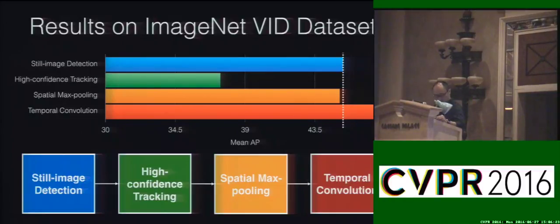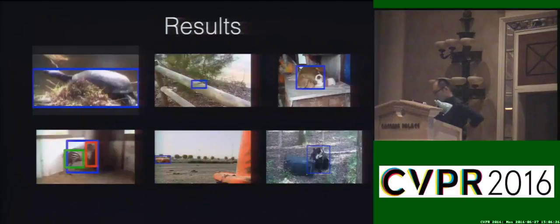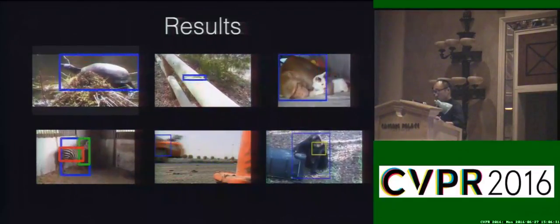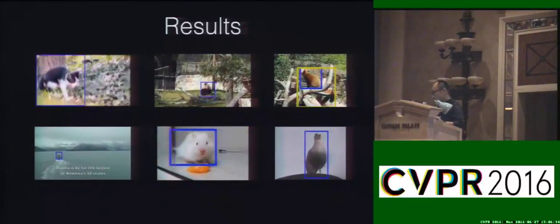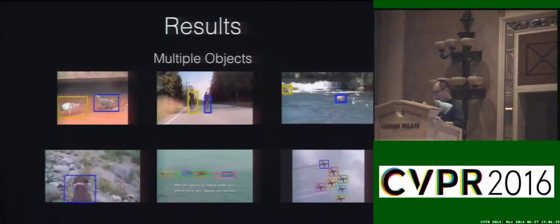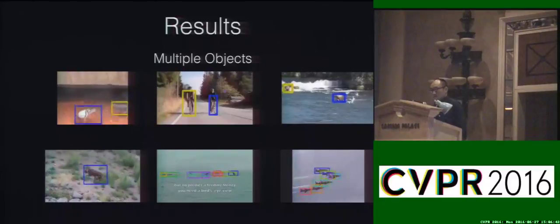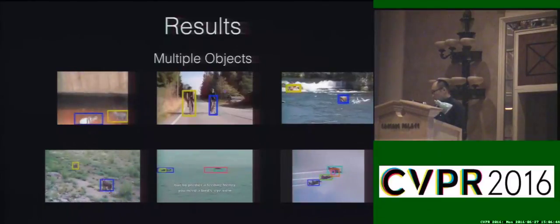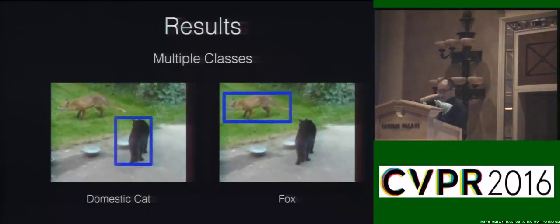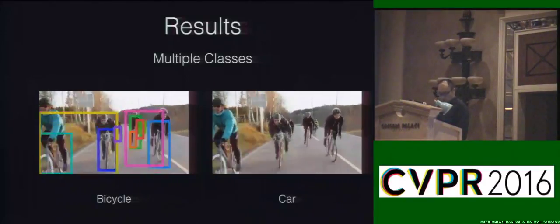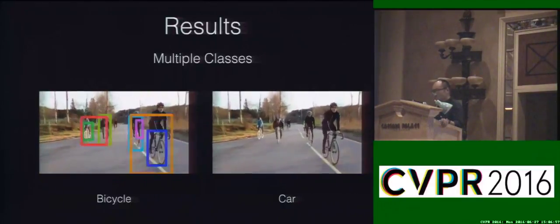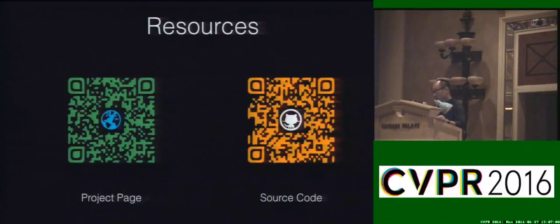Here are some result visualizations. Our framework is able to detect multiple objects from multiple classes across multiple frames, because the tracking and temporal scoring are performed for each class individually. For example, on the left it detects the domestic cat, and on the right it detects the foxes. If you are interested in our work and the ImageNet VID challenge in general, you can visit us at the poster session. Thank you.